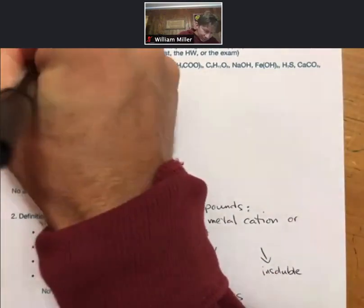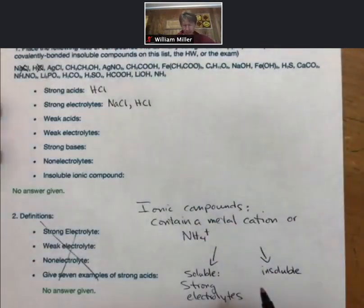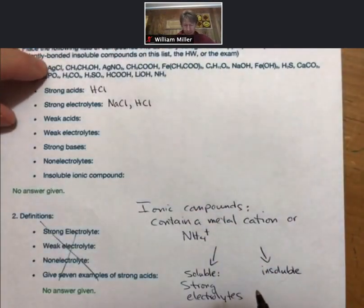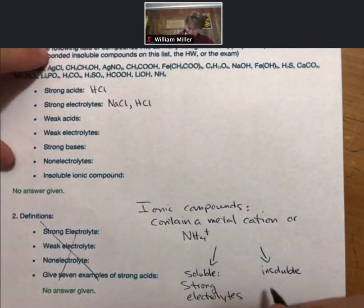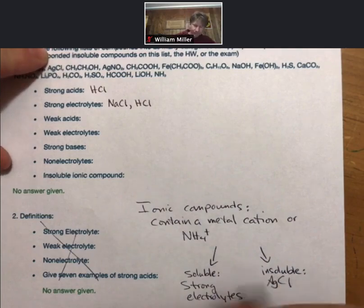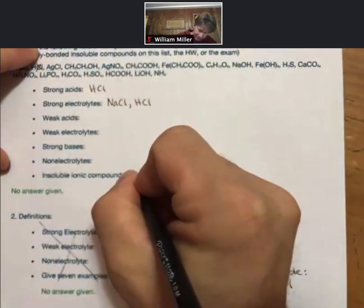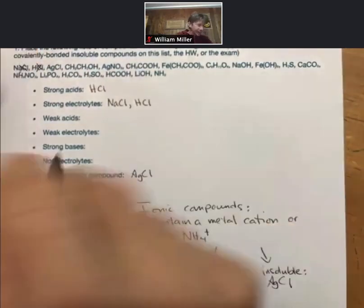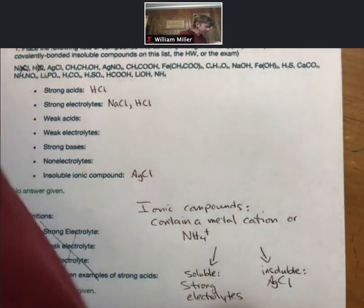So working our way through this list here, silver chloride. Almost all chlorides are soluble except a very few. One of those is silver chloride, and so that goes in our insoluble list. And according to our solubility rules,